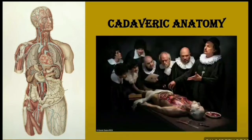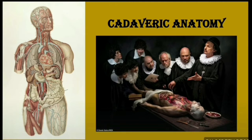Cadaveric anatomy is the study of a dead embalmed body, as seen in the image. There are two approaches to studying cadaveric anatomy. The first is regional anatomy — studying different regions such as the lower limb, head and neck, brain, or upper limb. The second is systemic anatomy, which studies the different systems of the human body, such as the muscular system and the cardiovascular system.